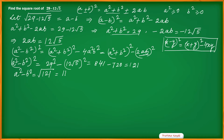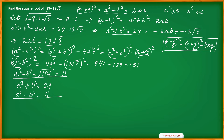Since I have assumed a is greater than b, I take a squared minus b squared as positive 11, not negative 11. Now I have two relations: a squared plus b squared equals 29, and a squared minus b squared equals 11. Adding these two equations, I get 2a squared equals 40.